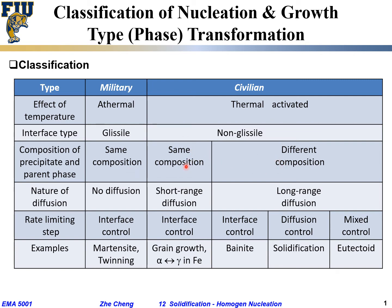For civilian transformations, there are two types: the majority involve different composition, but there are also some that remain at the same composition. In terms of the nature of diffusion in this process — diffusion is mass transport at the atomic scale, random motion.